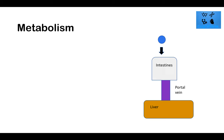Metabolism is the third step — after absorption and distribution. This is one of two ways to decrease drug concentration; the other is excretion. The liver is the primary site for drug metabolism, where first-pass metabolism occurs. When an oral drug is absorbed through the intestines, goes through the portal vein to the liver, it undergoes first-pass metabolism.